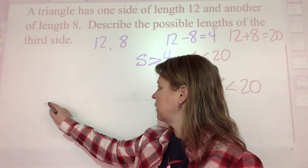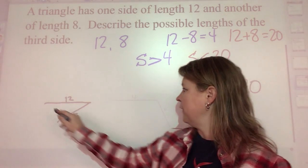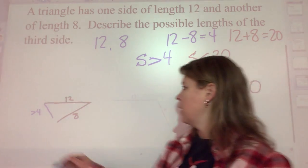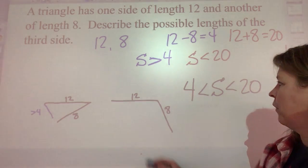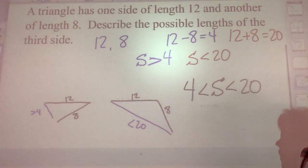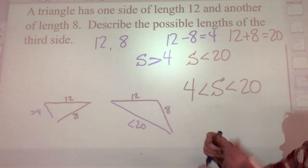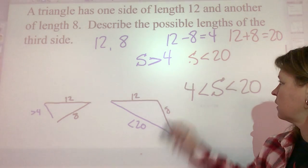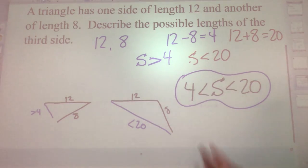Think of it this way: if you have a stick that's 12 units long and one that's 8 units long, the third side has to be at least bigger than 4 to bridge the gap. But you could also open those two sticks up to make an obtuse triangle — then make sure the third side is smaller than 20. If it were 22 or 23, you couldn't make a triangle. So the third side must be bigger than 4 but less than 20.